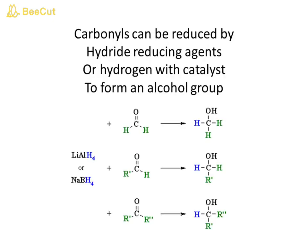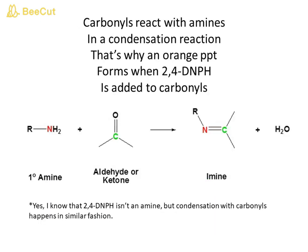Carbonyls can be reduced by hydride-reducing agents or hydrogen with a catalyst to form an alcohol group. Carbonyls also react with amines in a condensation reaction — that is why a yellow-orange precipitate forms when 2,4-DNPH is added to carbonyls.